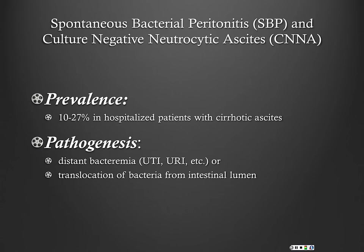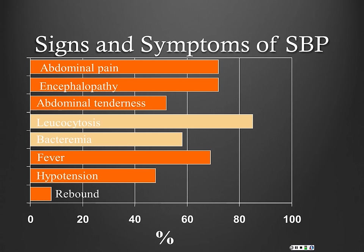Pathogenesis can be distant bacteremia — they may have a UTI or URI — or bacterial translocation from leaky gut, which we know occurs in patients with cirrhosis. Signs and symptoms are very nonspecific: only 50% of patients with SBP actually have abdominal pain based on their ascites serology findings.